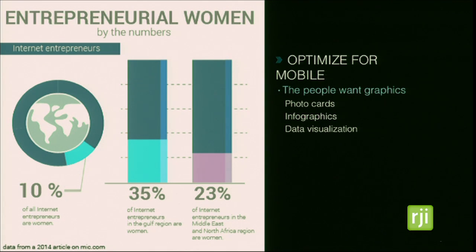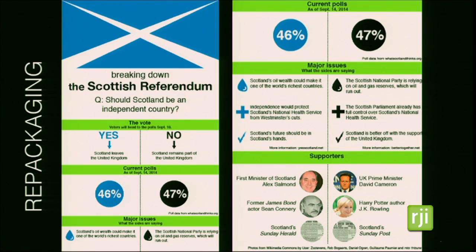We've also been optimizing content for mobile, particularly visual content — something Joy has been working on extensively. We found that people really like visual, data-driven information, so she's created photo cards we use to advertise the weekly radio show, and we've created infographics. We've also been repackaging content — for example, we published something about the Scottish referendum several months ago, and when the vote was coming up we took that already-published content, repackaged it into an easy-to-consume infographic, and sent it back out to readers, making it a little different and more timely.